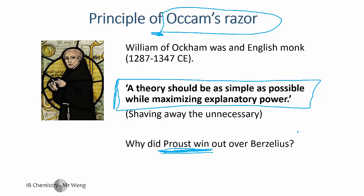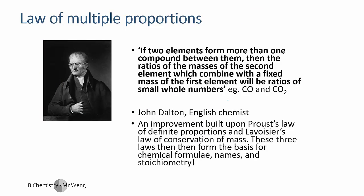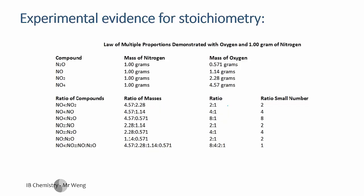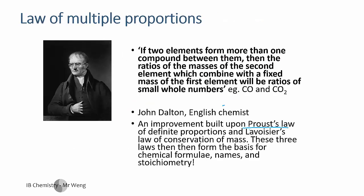Our theories are as simple as they can be to explain the most number of things as possible, which means by definition there are always going to be exceptions to rules. There are quite a lot of laws that we use for stoichiometry. Another one: if two elements form more than one compound between them, the ratio of the masses of the second element combining with a fixed mass of the first will be ratios of small whole numbers. Basically, we discovered that there are stoichiometric ratios. Lavoisier also gave us conservation of mass, which ties to conservation of energy. And so there we have all the scientific basis for writing chemical formulas and knowing that reactions happen in those ratios.